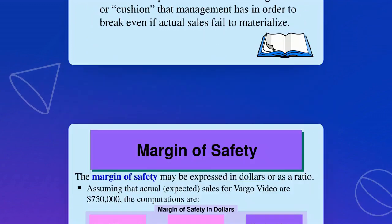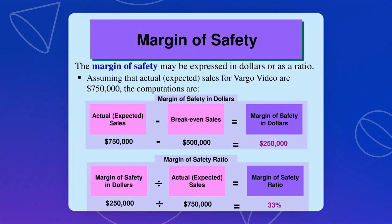In terms of MOS, it can be expressed in total. The formula is: actual sales minus break-even sales equals the margin of safety in peso. So if actual sales is 750 and break-even point is 500, the margin of safety is 250. It can also be expressed as a ratio: margin of safety divided by actual or expected sales. The MOS ratio here is 33%.